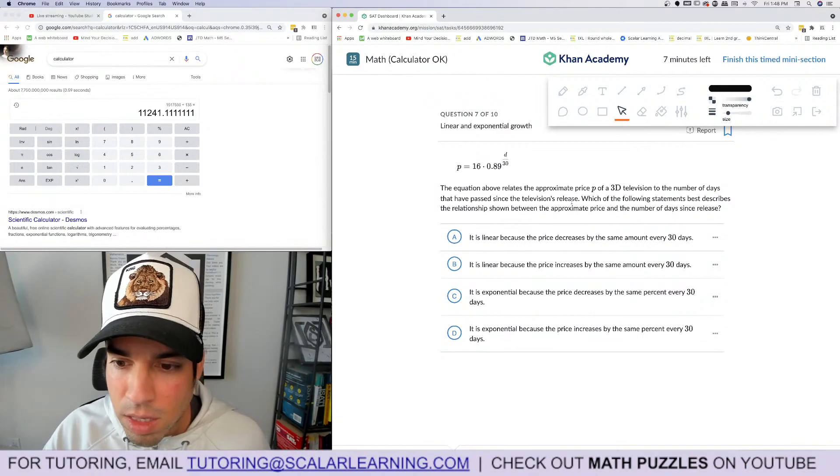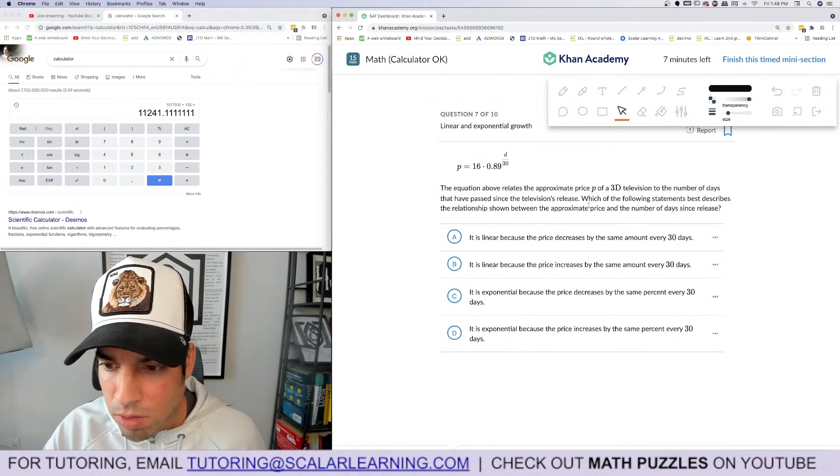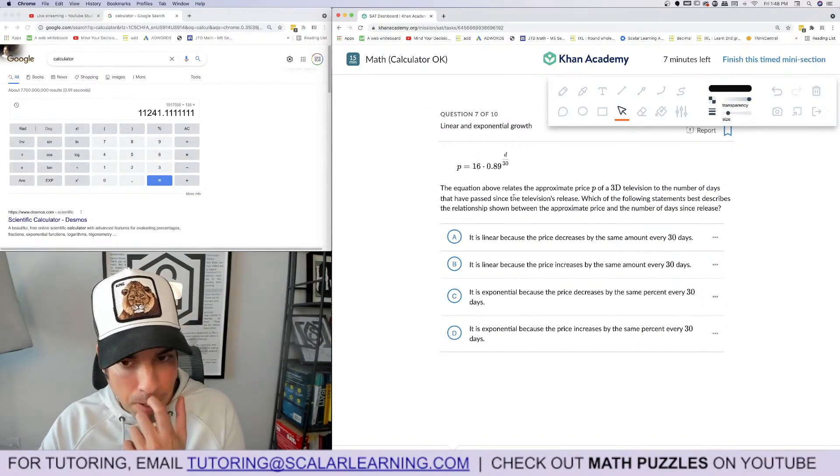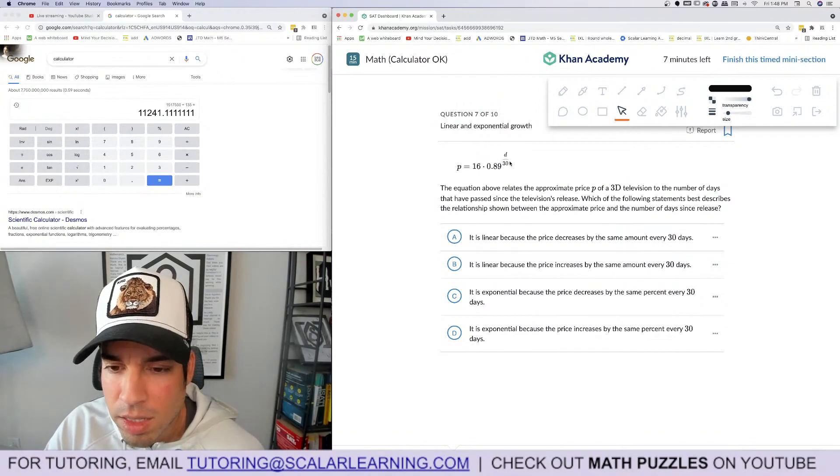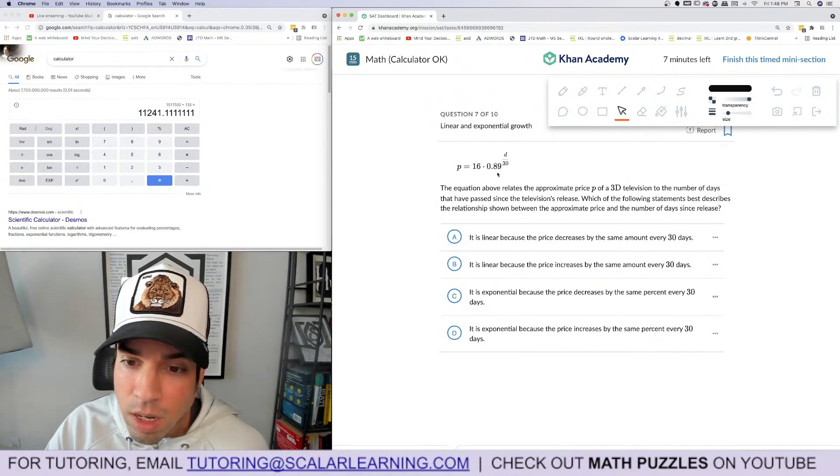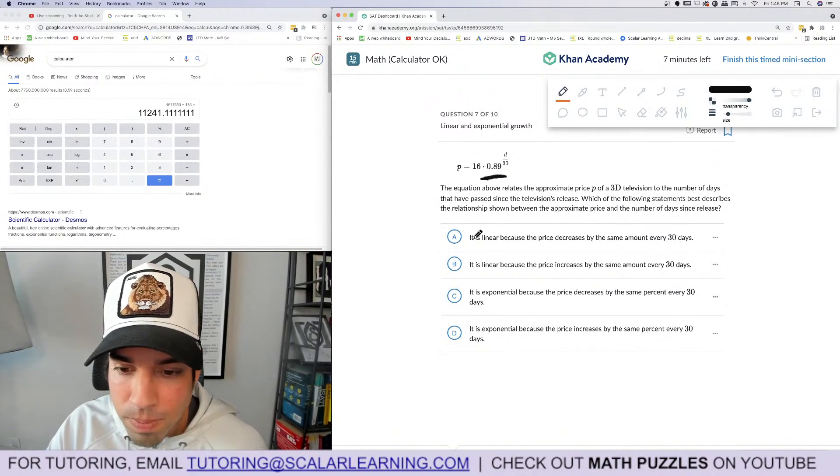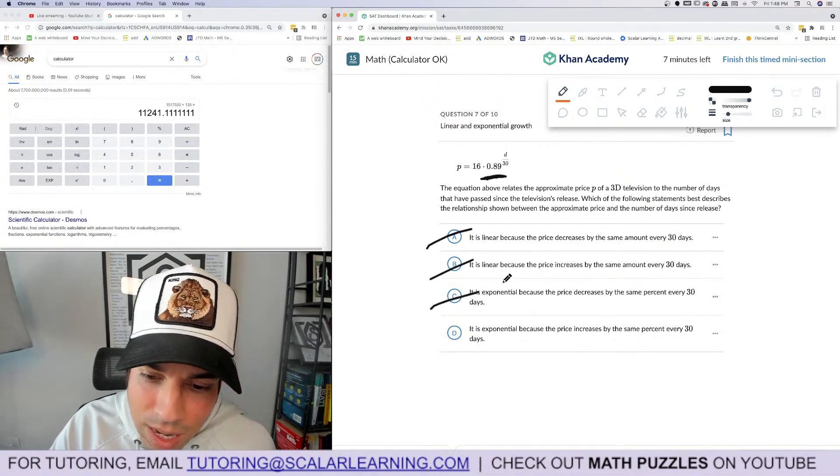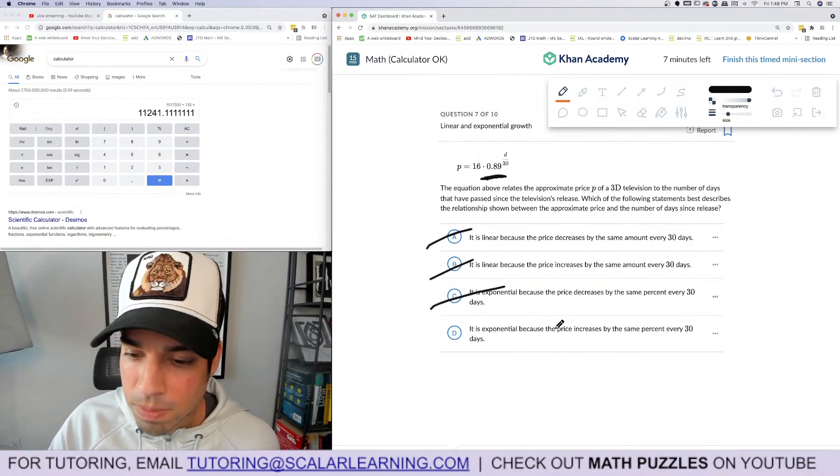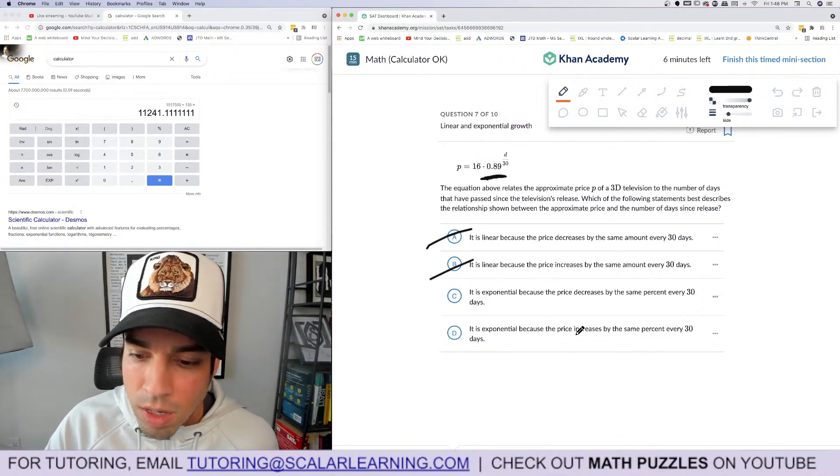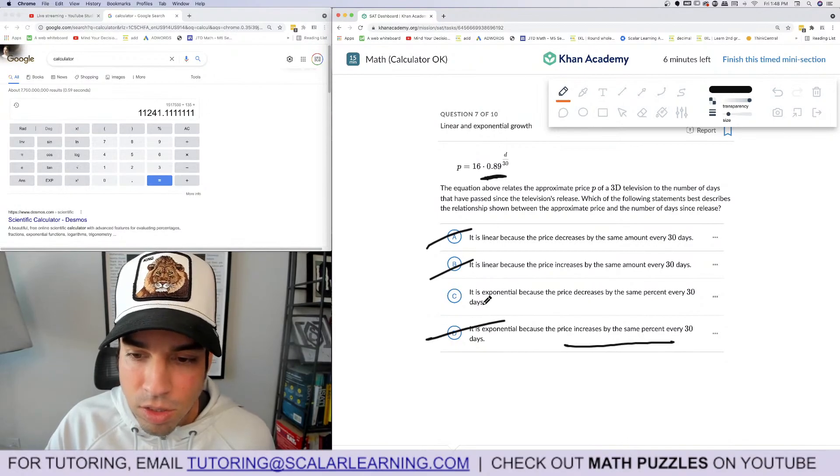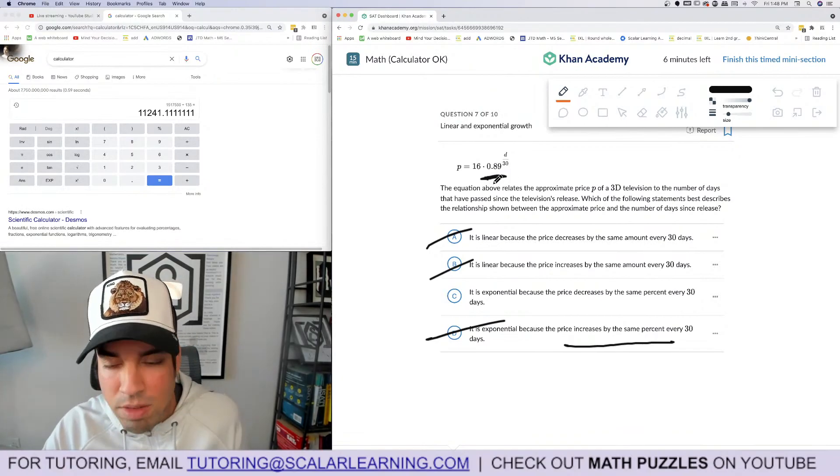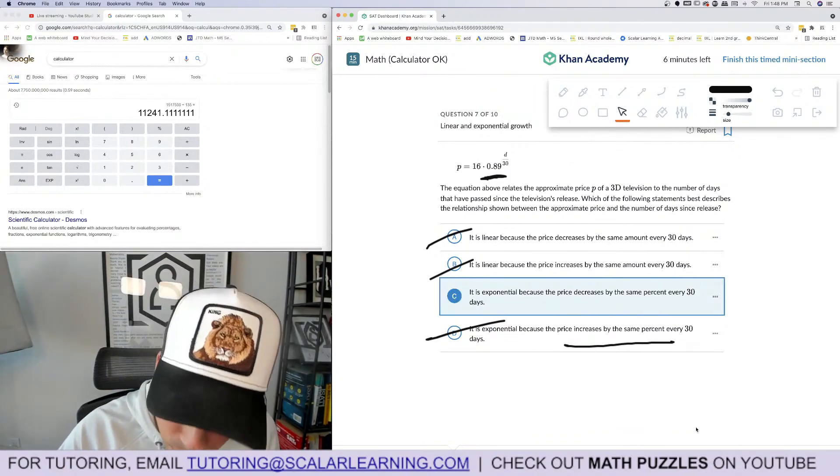The equation above relates the approximate price p of a 3D drone and the number of days that have passed since release. Which following statement best describes the relationship shown between the approximate price and the number of days? It looks like the price is decreasing exponentially because there's an exponential equation and this is less than one. Linear, no. It's exponential because the price decreases - it is C. And what it's decreasing by is 11 percent, not 89, but what's taken away from one is the decrease.